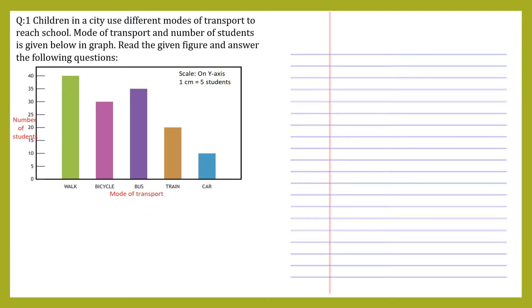Now let's see the figure. This is the bar graph. You can see mode of transport on the x-axis and number of students on the y-axis. The scale considered on the y-axis is one centimeter equals to five students.